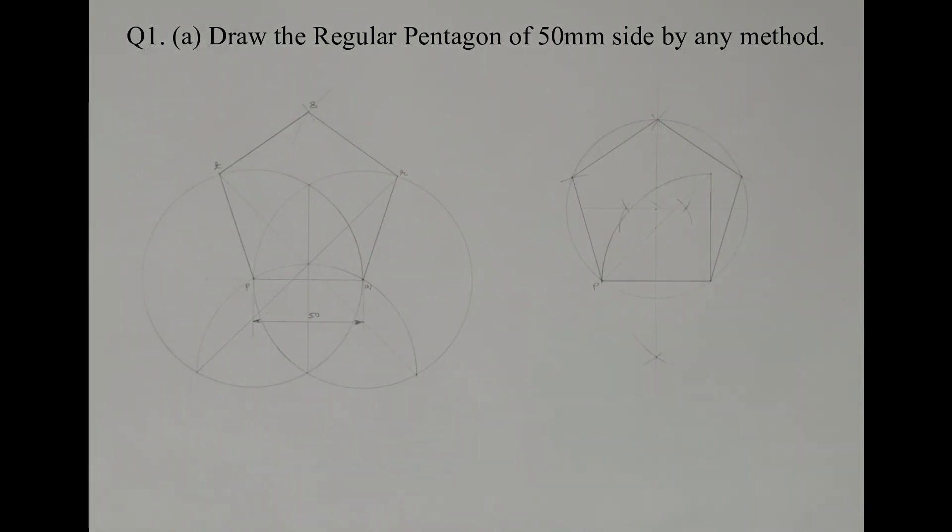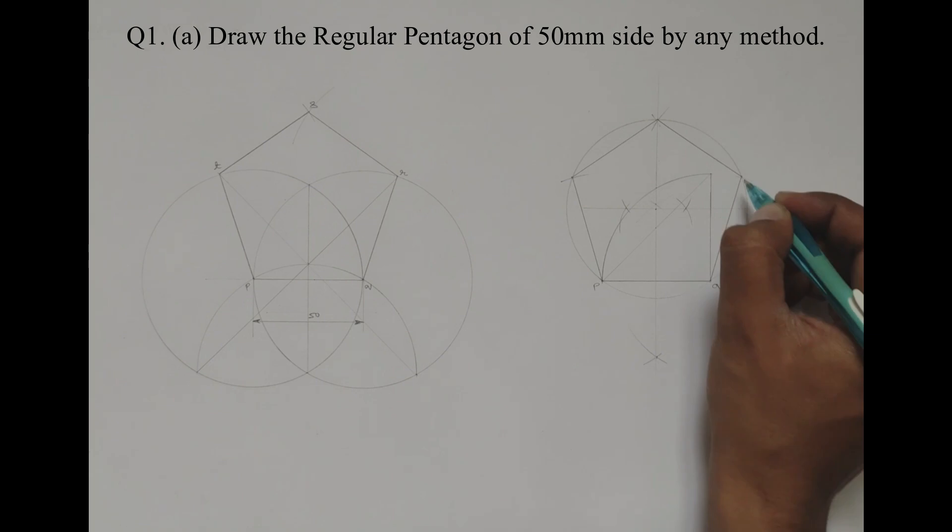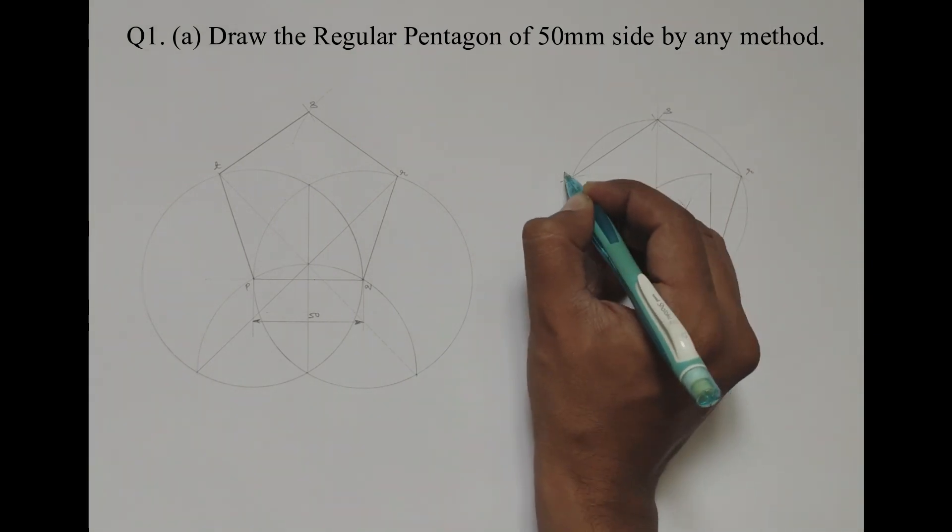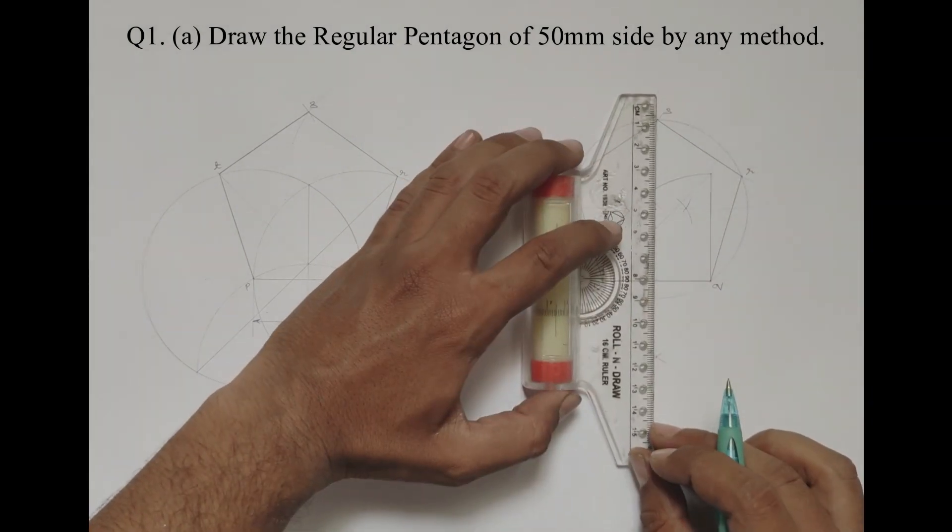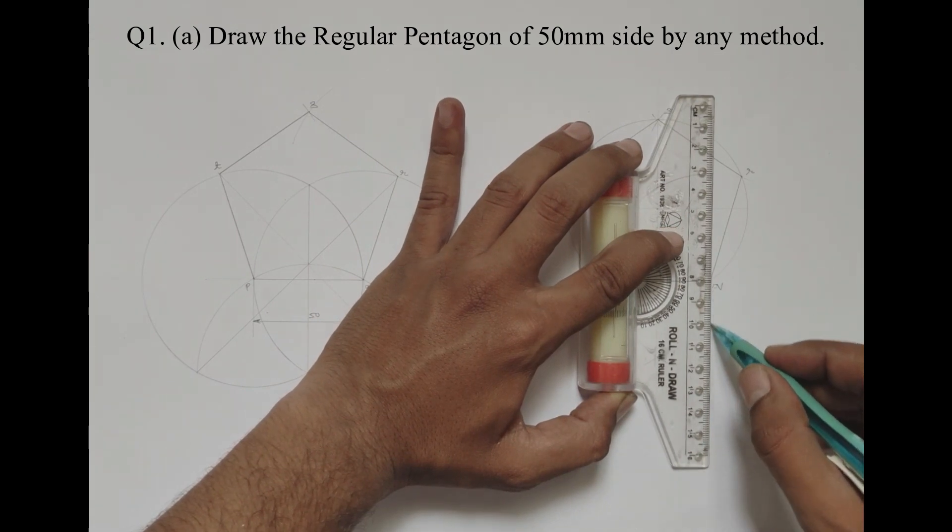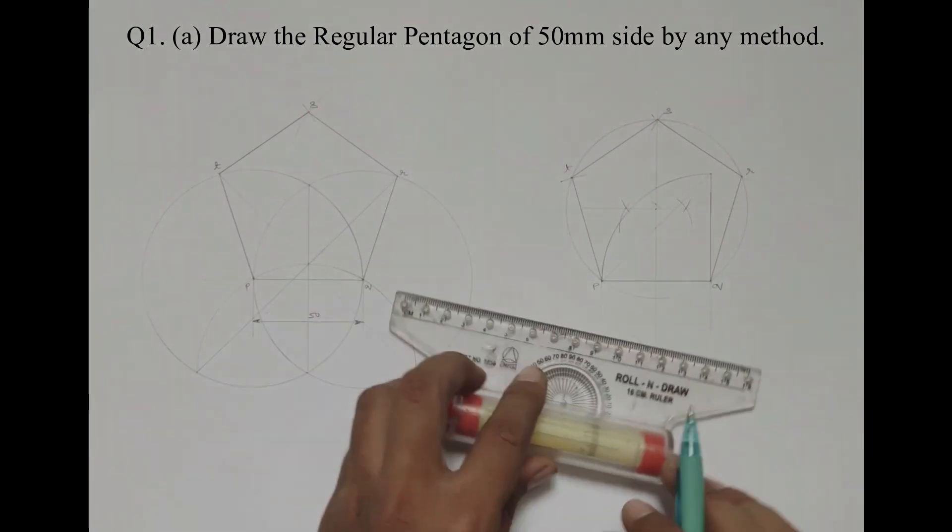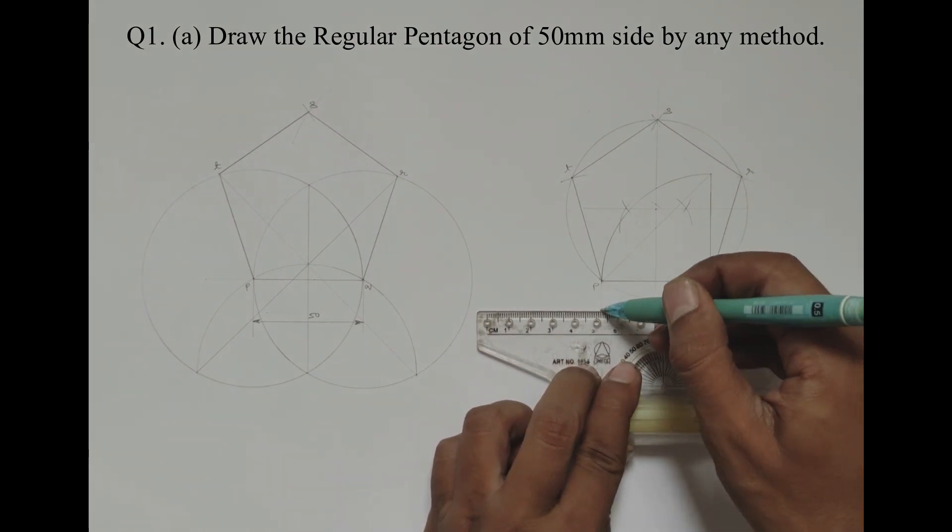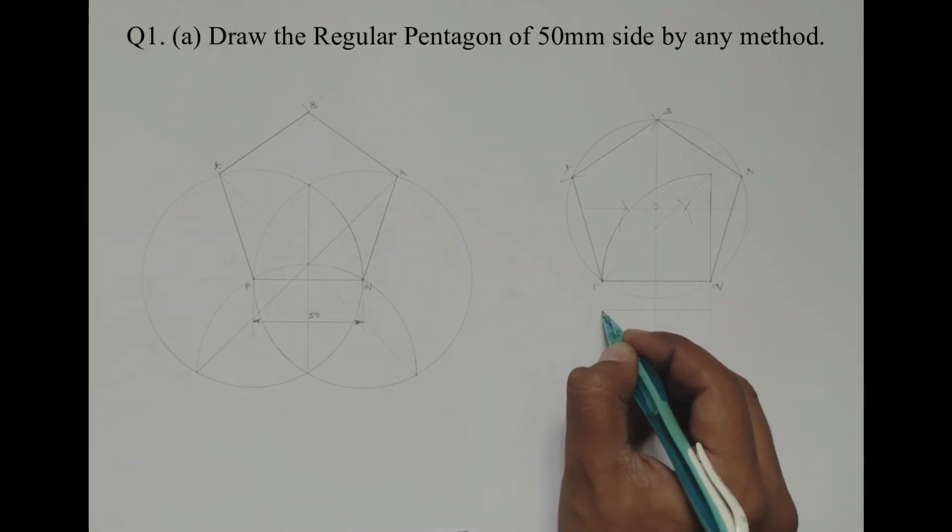And the last thing is to give the labels. I'm using the same labels here. You can use any of these methods. There are more methods also apart from these two. You can use any method because in the question it is not mentioned any method specifically.